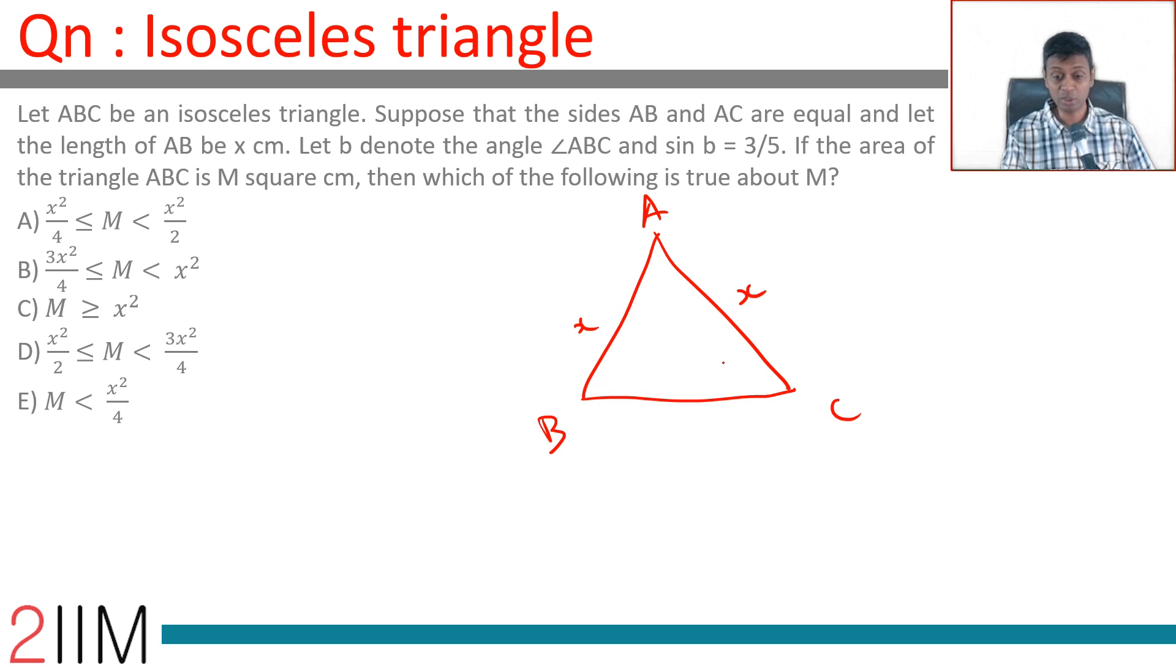Let B denote the angle ABC. Sin B is 3 by 5.